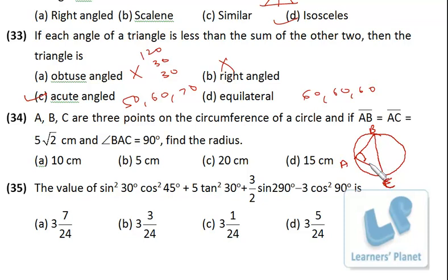So BC must be diameter of the circle because angle BAC is 90 degree. So this is 90 degree. Now ABC, it is a right angle triangle. This is 5 root 2. This is 5 root 2. So square of this plus square of this will be square of this.